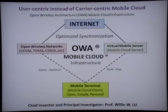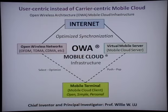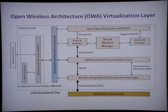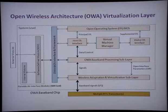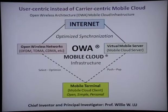All four parts — four nodes — can synchronize with each other, constructing a very strong mobile cloud infrastructure. In order to support this, the mobile device must support open wireless architecture. This entire architecture will be put into one chip — the OWA baseband chip. When you have this OWA baseband chip in a mobile device, the device can support multiple wireless standards and work with the mobile cloud architecture to construct the whole mobile cloud infrastructure. That's all for my presentation today.